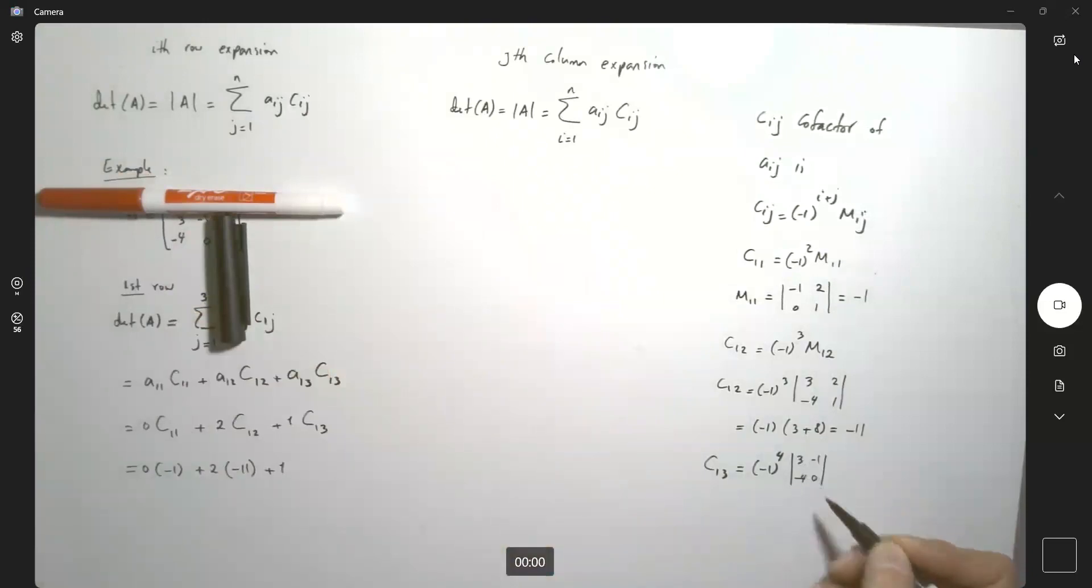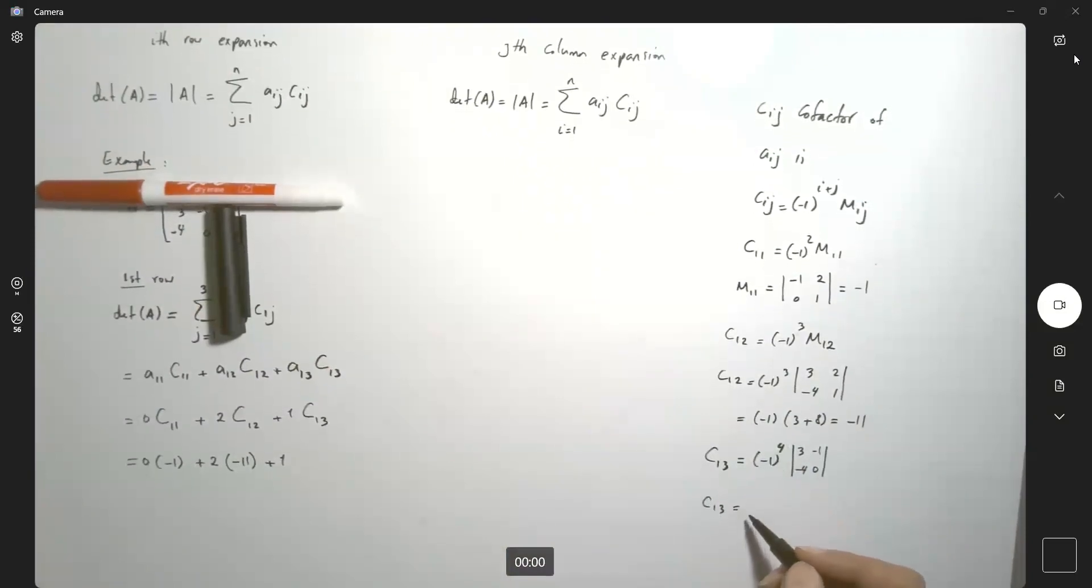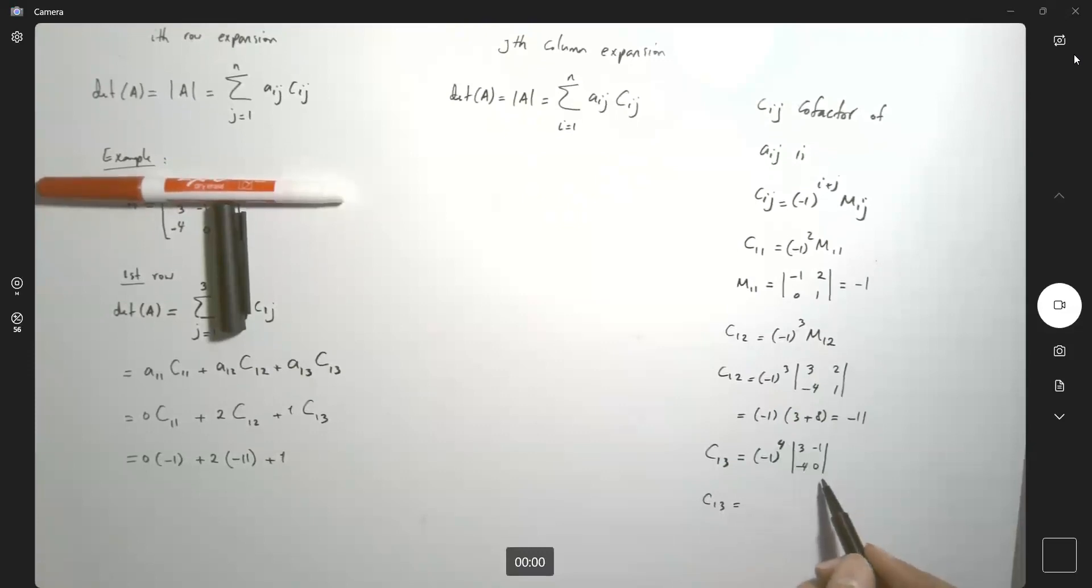So C1,3 is equal to (-1)^4, which is just 1. And then you have 3 times 0, which is 0, minus -4, which is -4. So the determinant of this matrix is equal to 0 - 22 - 4, which is -26.